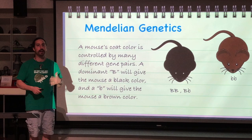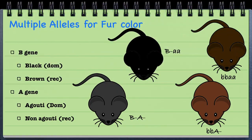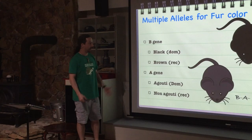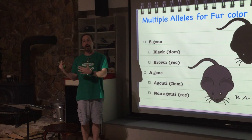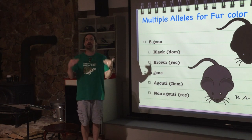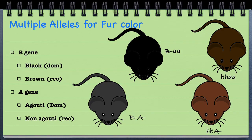Now we're going to add the second gene, which is for something called agouti — a yellow stripe in the fur. The agouti phenotype with yellow striping is dominant, and non-agouti is recessive. It lightens the coat a little bit. So now we have two different genes working together to give coat color: black, brown, black agouti, and brown agouti.